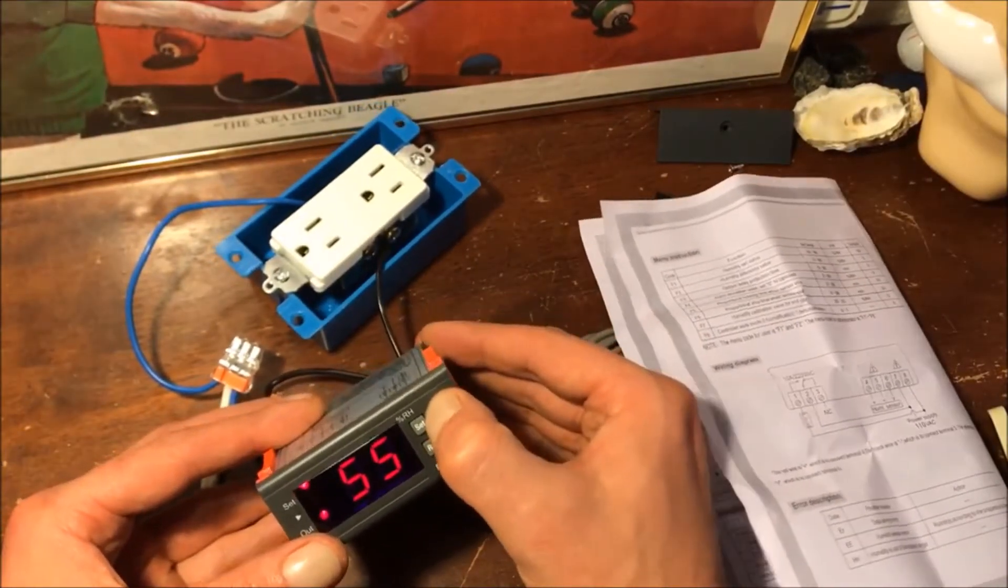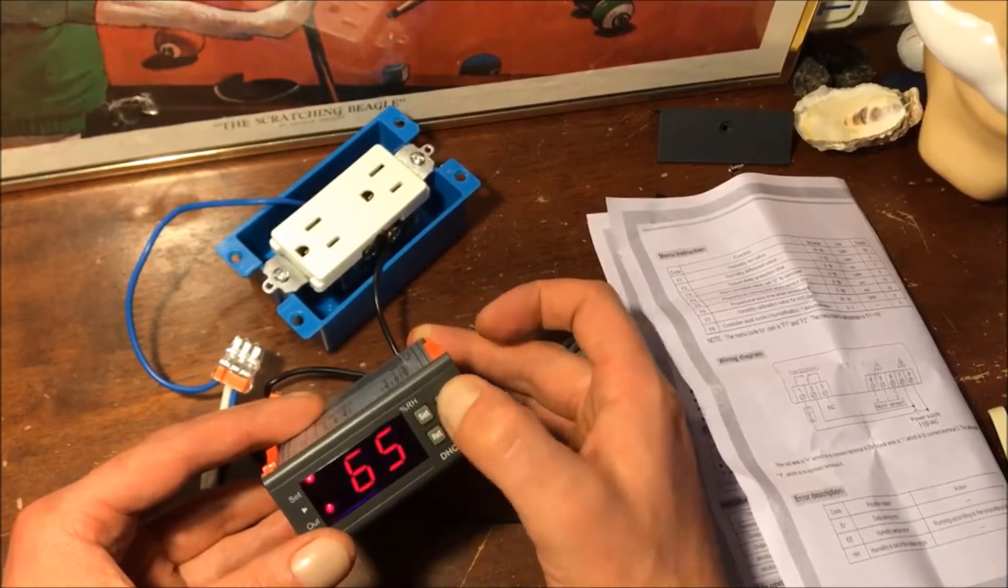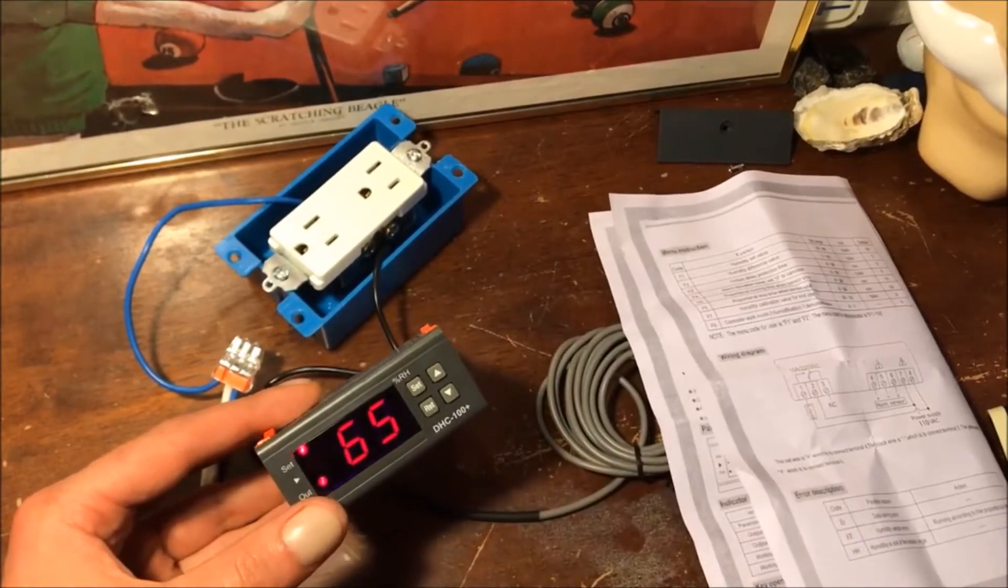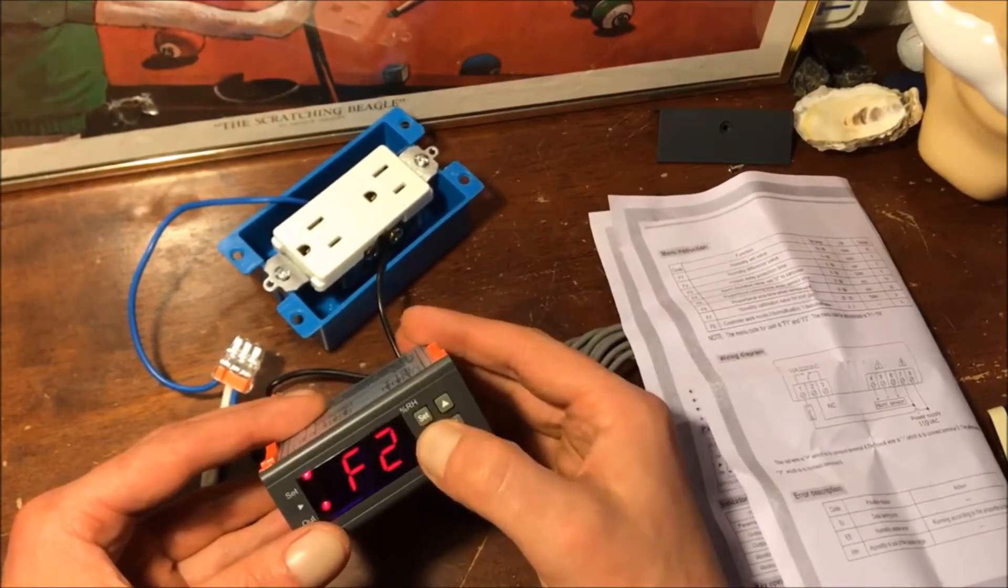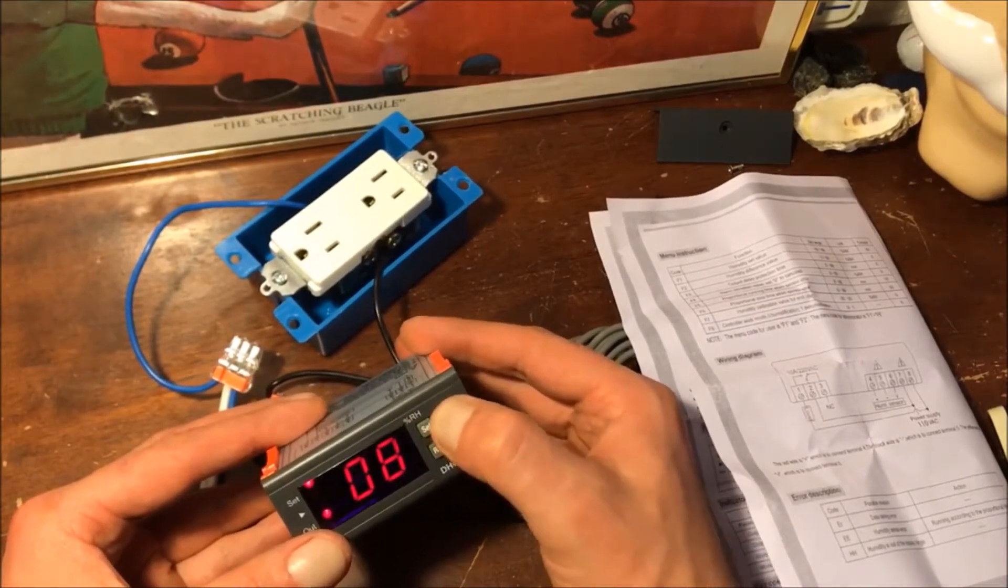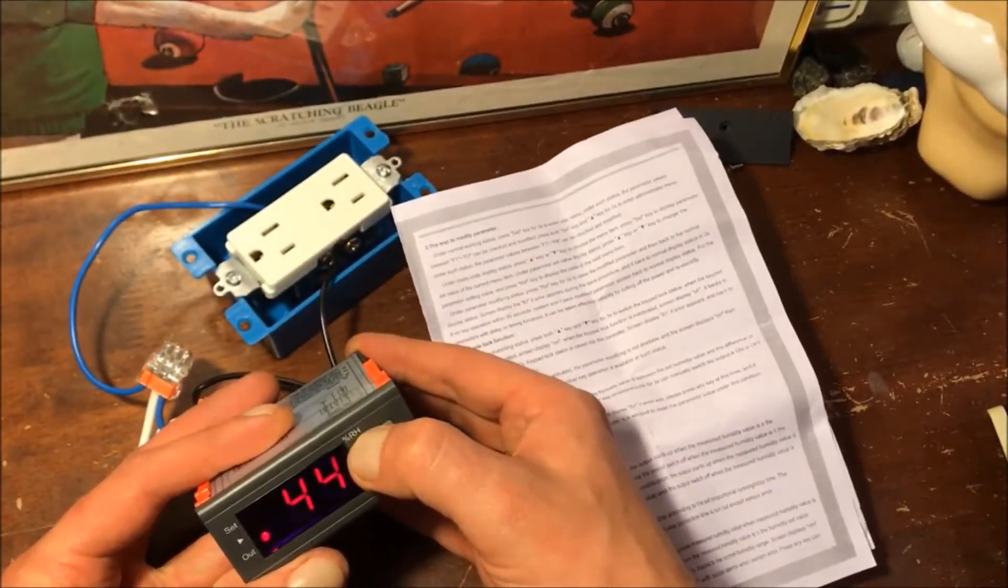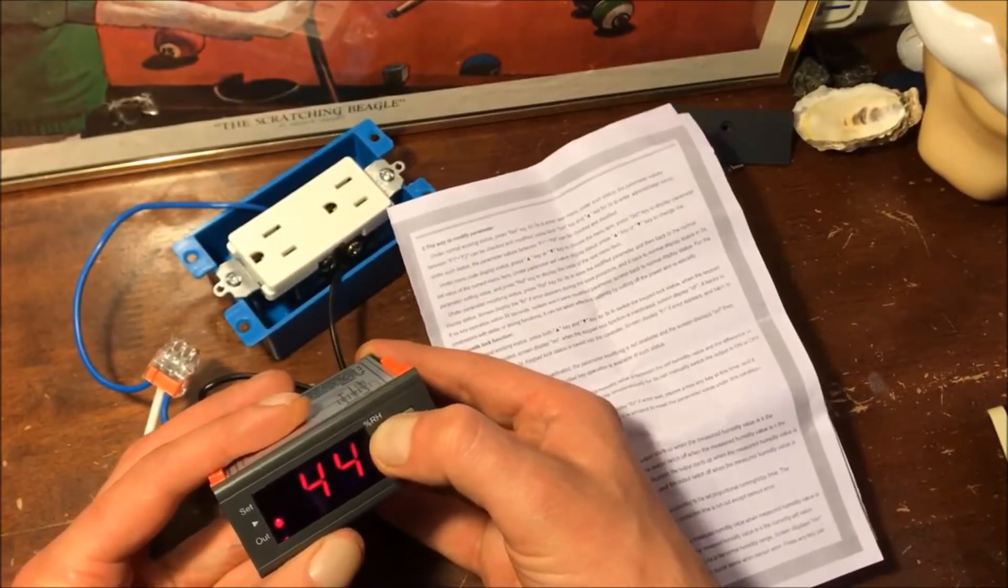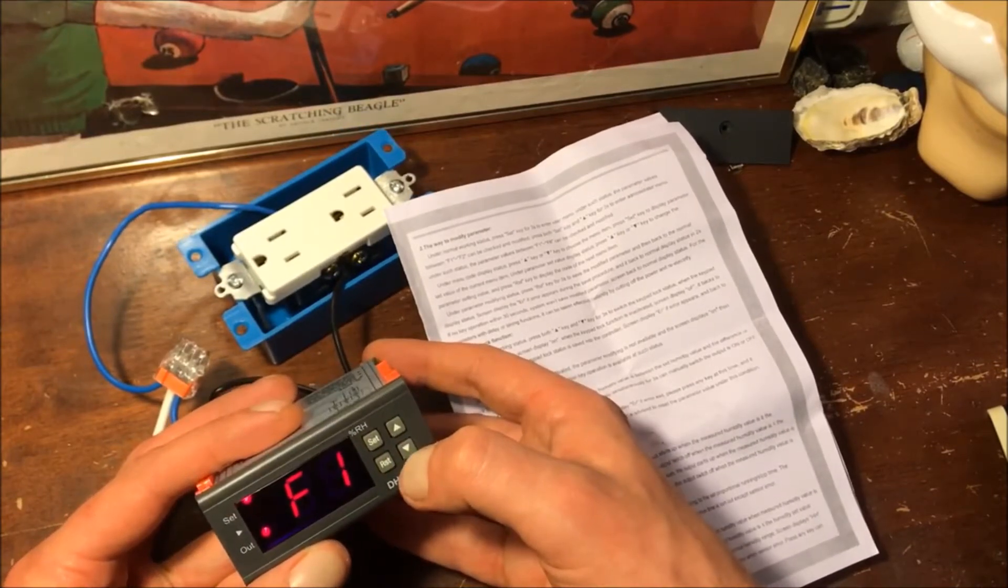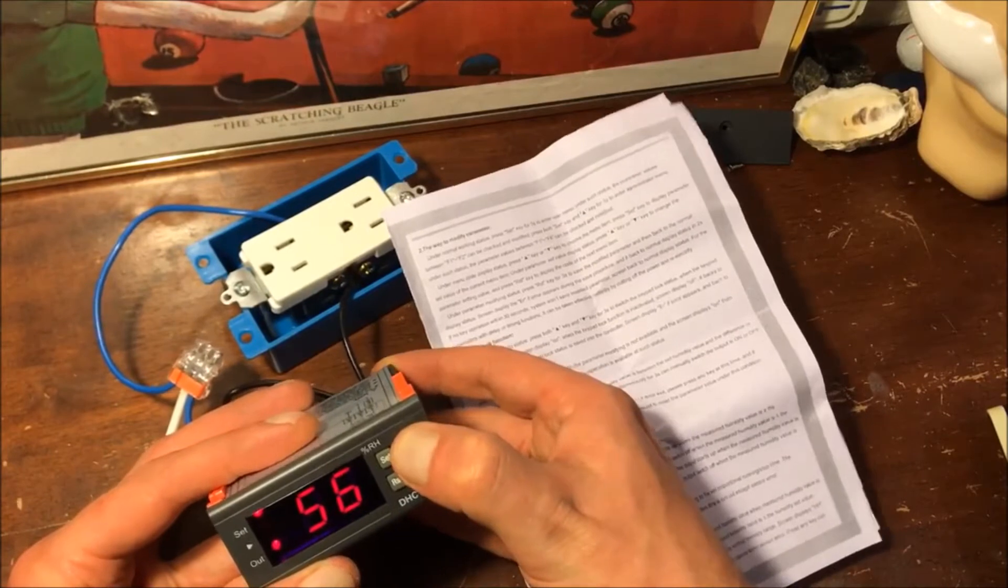F1 humidity set value, F2 difference value—10 to 100, 1 to 50. This is set to 50 as the default, so let's go ahead and set this up to 65. Then F2, let's just start with a difference of 10 degrees. Reset key for three seconds to save. Set key for three seconds to enter. Of course it's reset everything because we didn't save it.